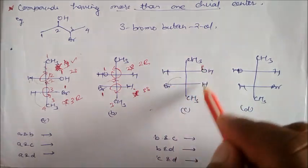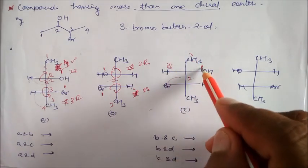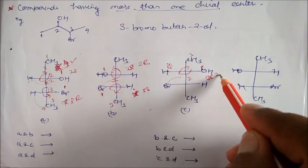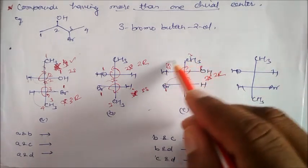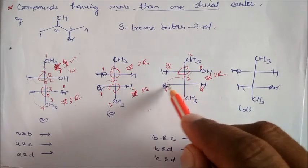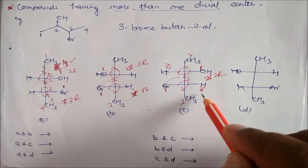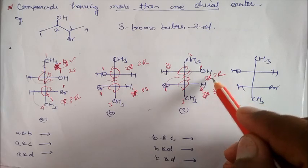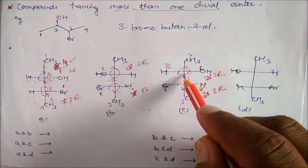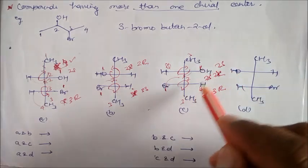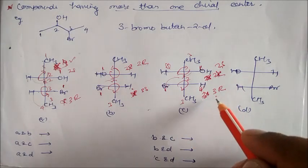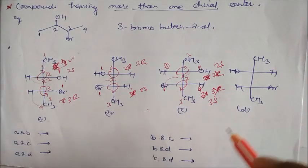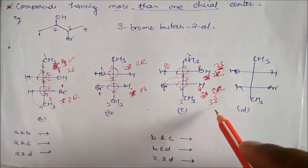Here also, OH is 1, the whole group is 2, and this is 3. This is the fourth group. So 1, 2, 3 — it is looking like your clockwise direction. So it is not clockwise — it is not 2S — this will be your 2R. Similarly, here this is bromine as 1, the whole group is 2, and this is 3. This is the fourth group. So 1, 2, 3 — looking like R, but this is not 3R — I'm sorry — this will be your 3S. Please correct this one. Wait — correction: this is actually your 2S and this will be your 3S. So compound 3 is 2S and 3S.